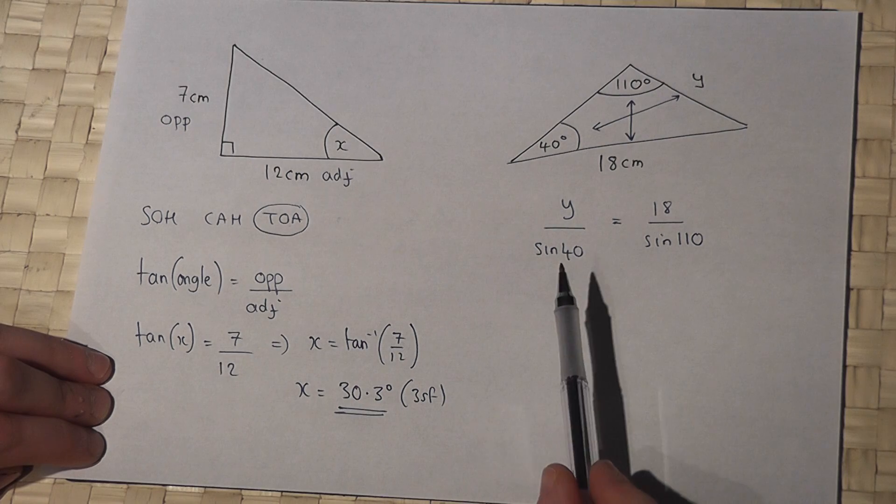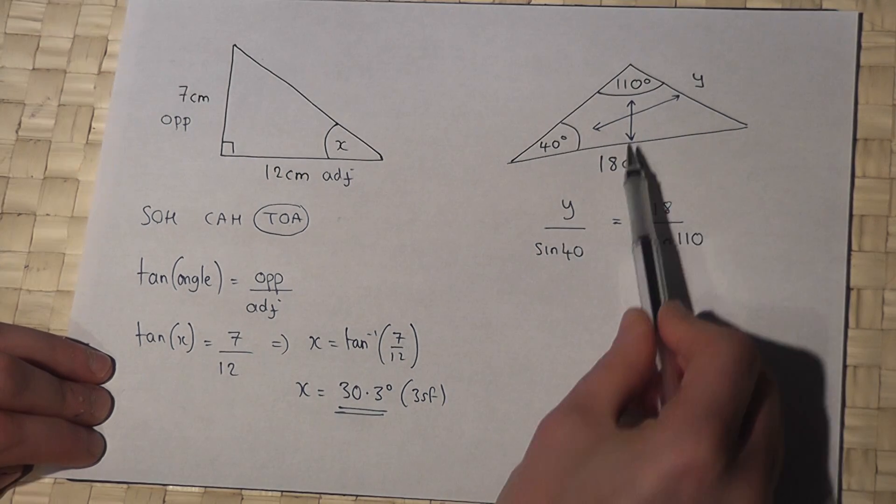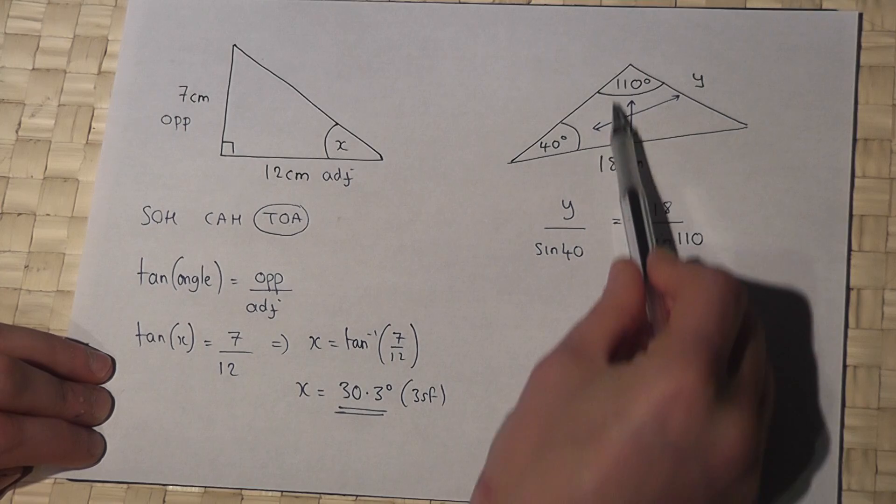So the sine rule says ratio of side over sine angle is equal to side over sine angle, if you pair off opposites.